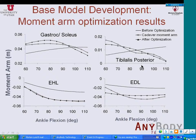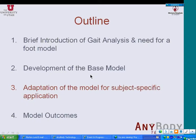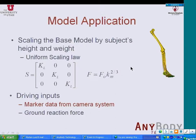Now that we have developed the model and made sure it reflects normal anatomy, we can move on to the steps involved in adapting the model for subject-specific application. The model was developed based on a CT scan of a single subject for which cadaver data was available. The segment size needs to be adjusted for each subject's height and weight. We use geometric scaling, where KL is the ratio of the subject's height versus the height of the cadaver CT scan subject, and KM is the ratio of weight. The maximum force is scaled with KM to the power of two-thirds because force is proportional to cross-sectional area and mass is proportional to volume.